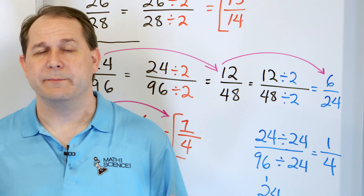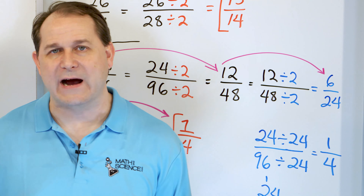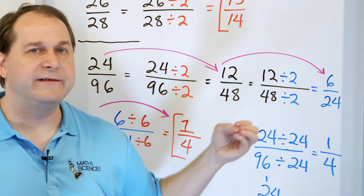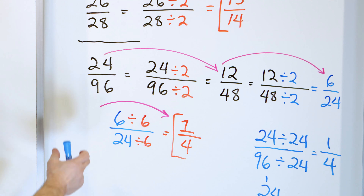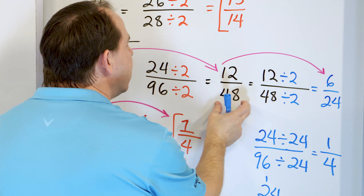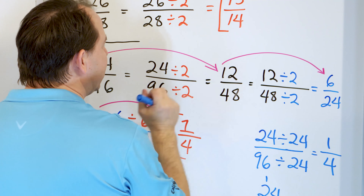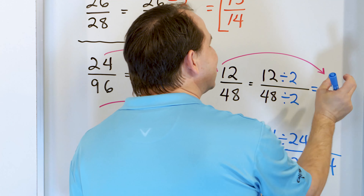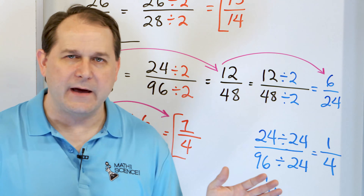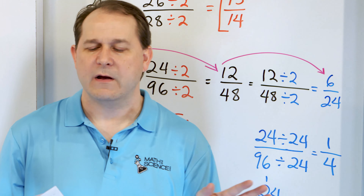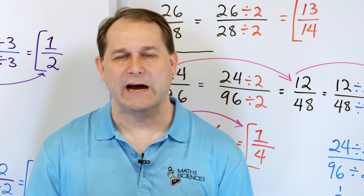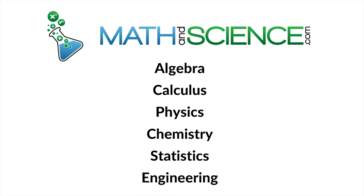Simplifying fractions is really important because when we add, subtract, multiply, or divide fractions, we'll always have to check if the answer is in lowest terms. Remember: twenty-four ninety-sixths of a pizza is exactly the same amount as twelve forty-eighths, which is exactly the same as six twenty-fourths, which is exactly the same as one slice out of four. They all represent the same thing, just written differently. Follow me on to part two — we'll wrap up our skills with simplifying fractions. Learn anything at mathandscience.com.